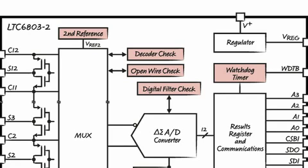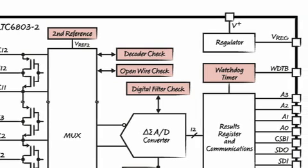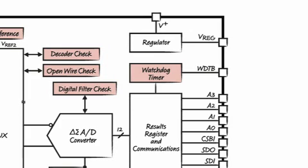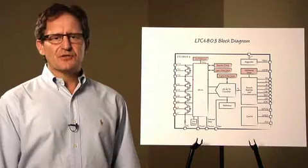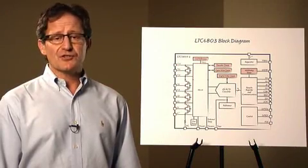Breaks in the wiring harness can be detected with the open wire check block. And finally, a watchdog timer circuit turns off the balancing MOSFETs and puts the IC in standby should communications with the microprocessor be interrupted. This feature prevents a damaging over-discharge condition.